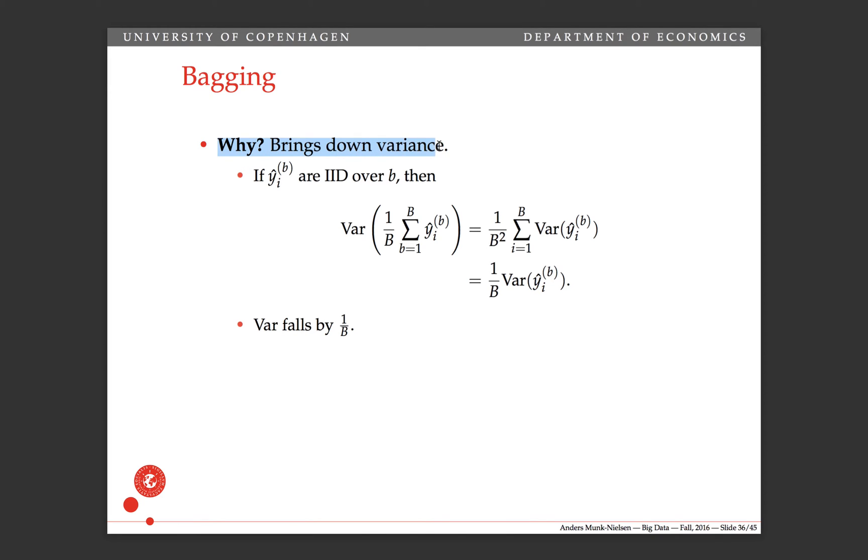Why then bag? Well, it's going to bring down the variance. Why is that? Suppose that the Y hats are independently and identically distributed. So they're independent. In particular, they're uncorrelated.